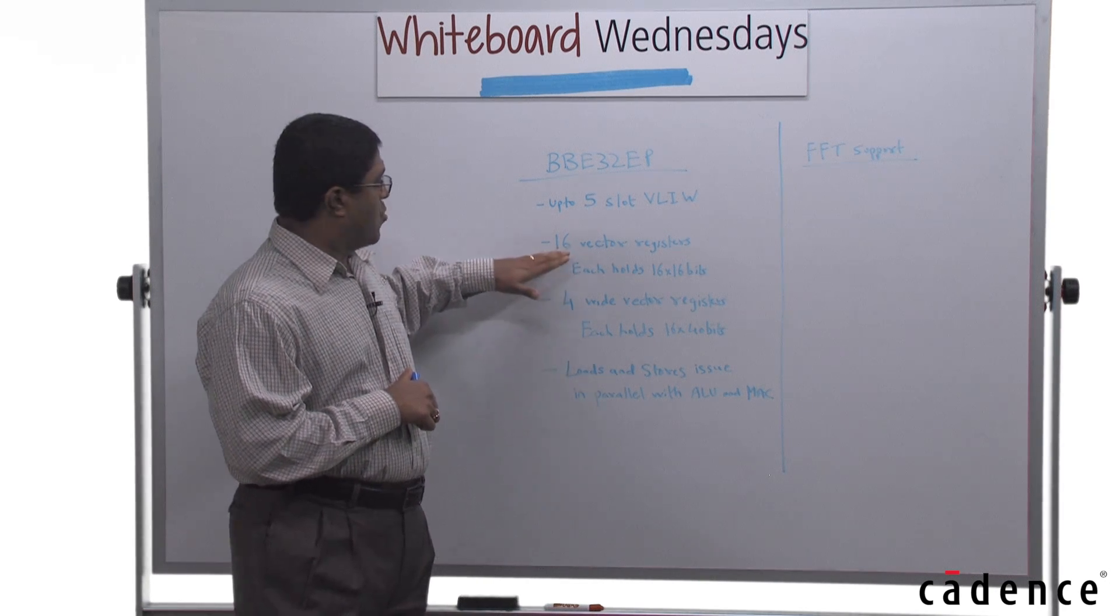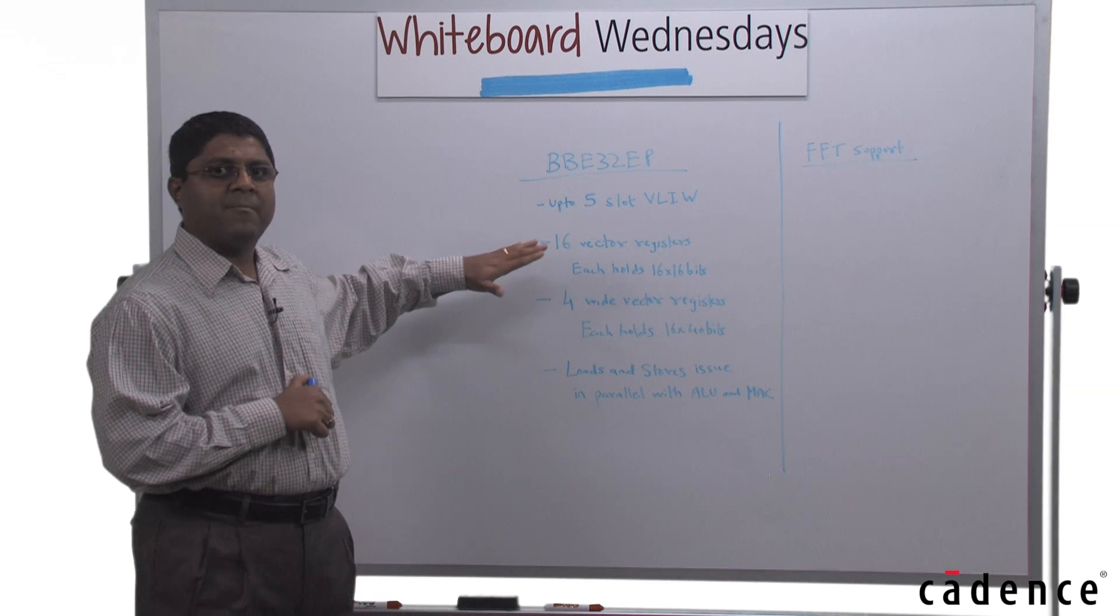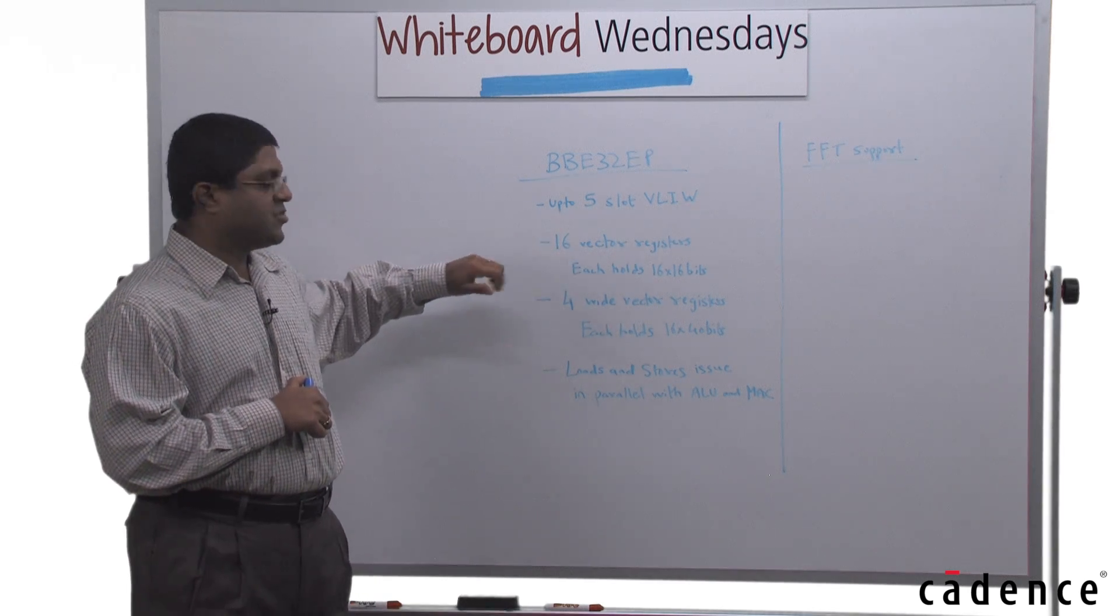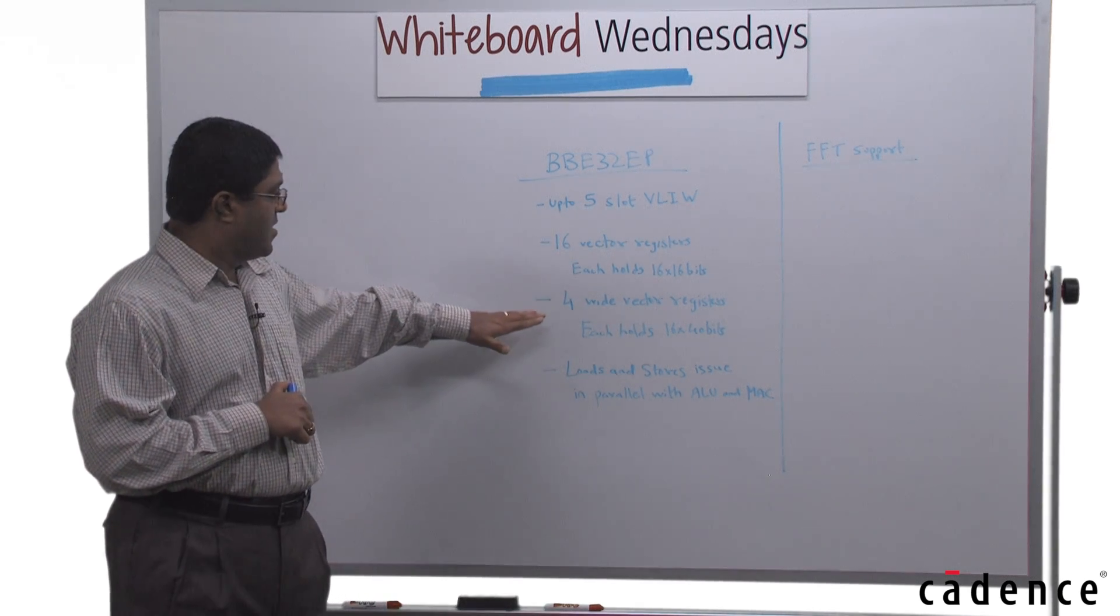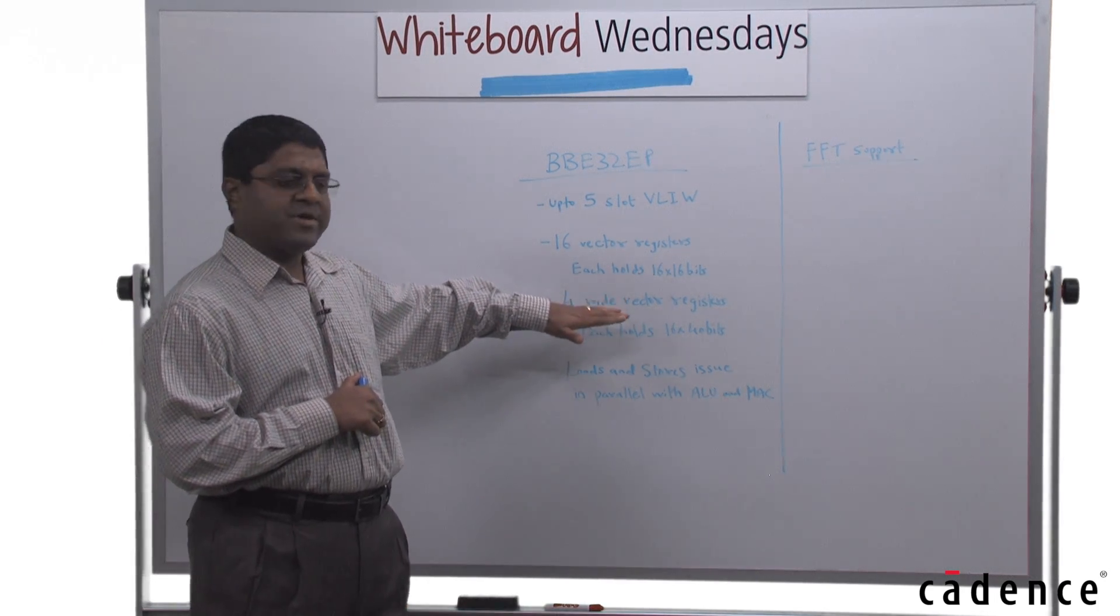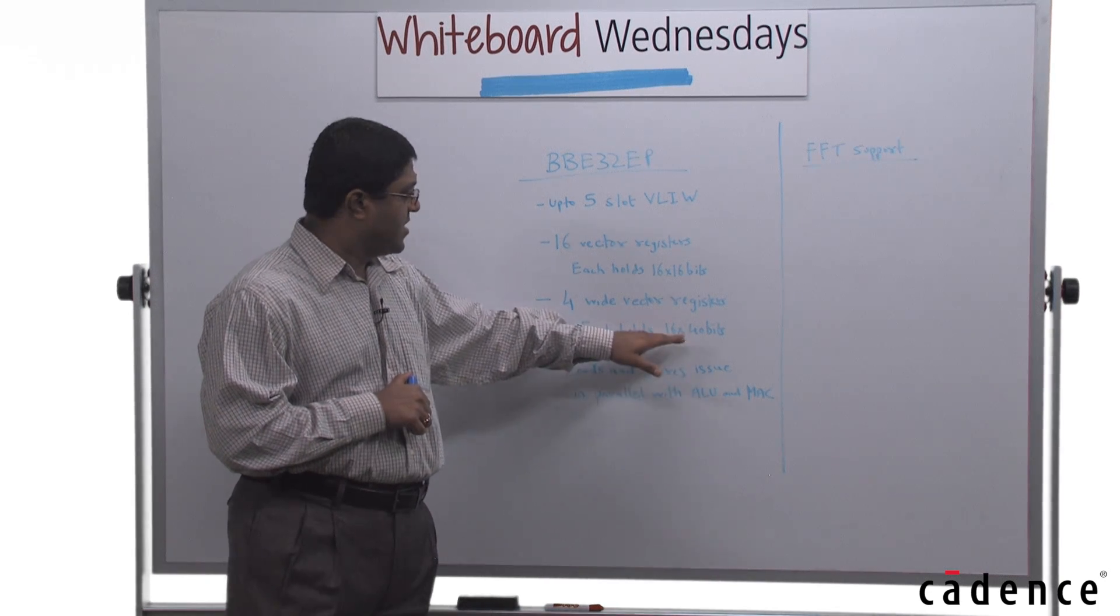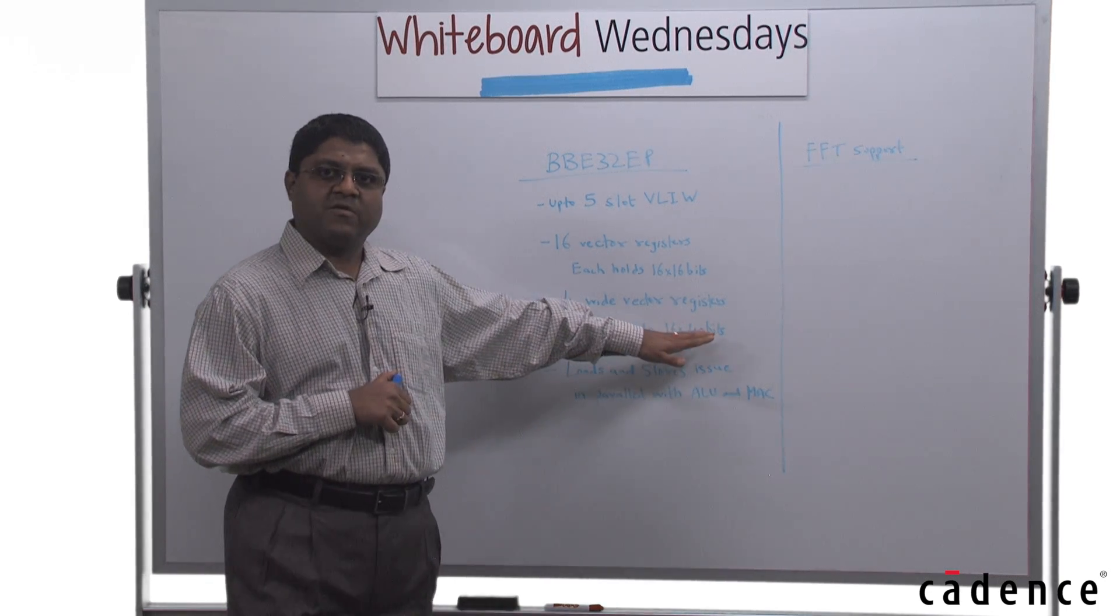One of these vector registers will hold 8 complex valued fixed point elements. There are 4 wide vector registers for doing accumulations. Each wide vector register holds 16 elements 40 bits each.